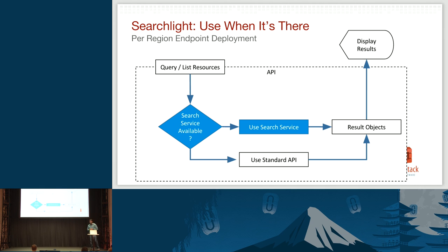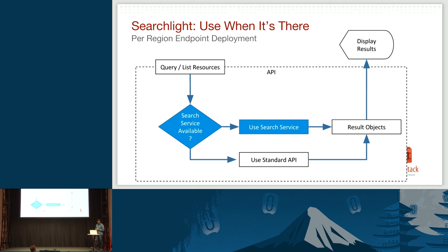How do you deploy Searchlight? You can have a Searchlight service deployed in each region. From Horizon or any other client you could use Searchlight and get results back. If you don't have Searchlight in a particular deployment, you can still go the alternative route — list Nova instances from Nova, list images from Glance. If you don't have it, go to the alternate existing route. Otherwise, you can use all the advanced capabilities that Searchlight provides.